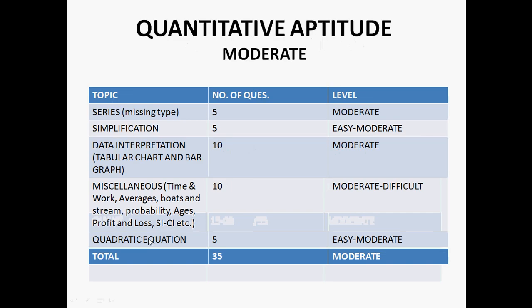Now let's see the quant section topic-wise. There were 5 questions from number series which was moderate, 5 simplification questions which were moderate, and 2 questions from DI — a tabular chart and a bar graph. There were 10 questions from miscellaneous topics which included time and work, averages, boats and streams, probability, ages, simple interest, and compound interest. There were also 5 quadratic questions which were moderate, making 35 overall questions at a moderate level.